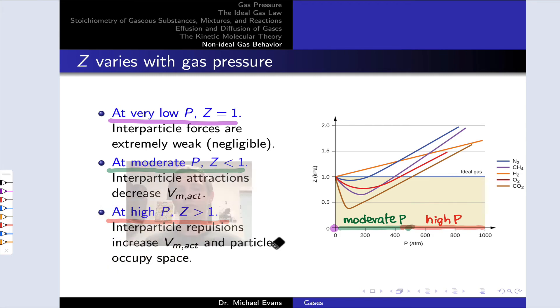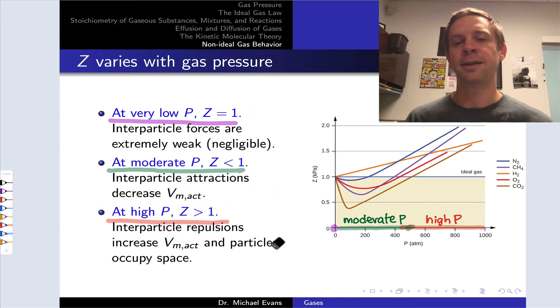There's also a temperature dependence, which is not shown on the slide, but I'll just talk through. At higher temperature, gases tend to behave more ideally. And the reason for this is that the kinetic energy of the gas particles becomes so large in relation to the potential energy that the potential energy essentially becomes negligible. So the strengths of intermolecular forces are essentially overcome by the large kinetic energy of the gas particles. In that situation, gases tend to behave more ideally.